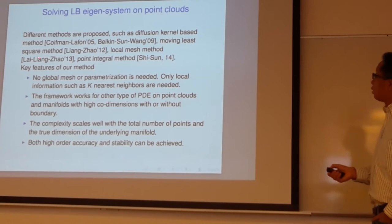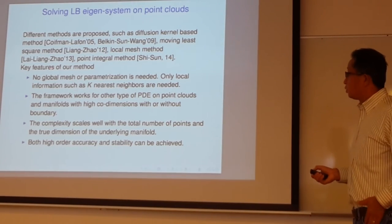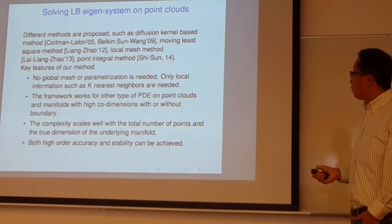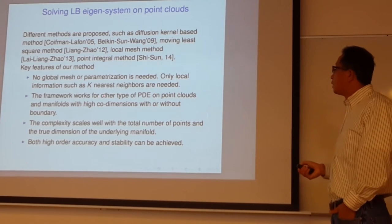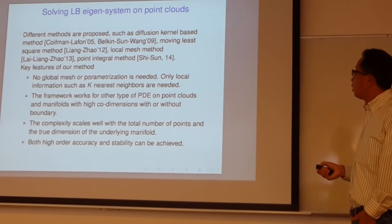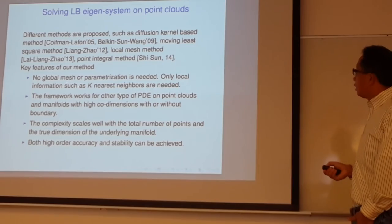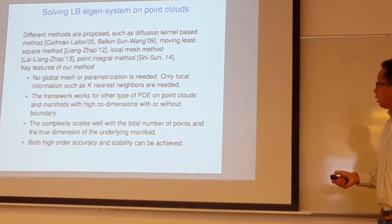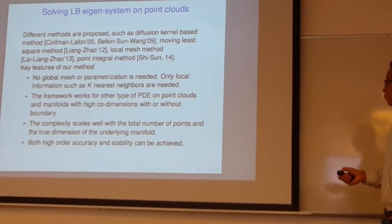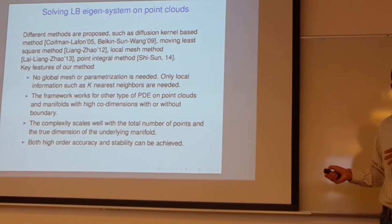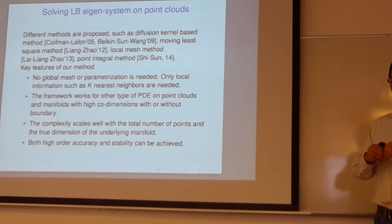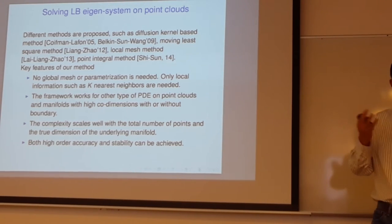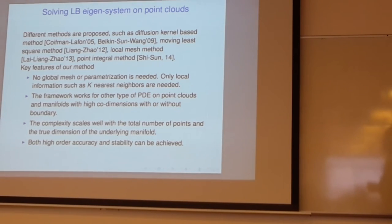What we are doing is different. The key feature is we don't need any global mesh, triangulation, or parametrization — only local information, basically the k-nearest neighbors for each point. It's like a finite difference scheme where the finite difference coefficients depend on how the neighboring points are positioned. We design a scheme that can be of any order, depending on what polynomial approximation you want to use.